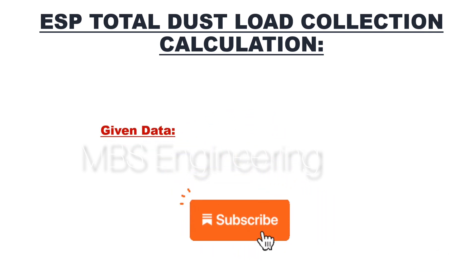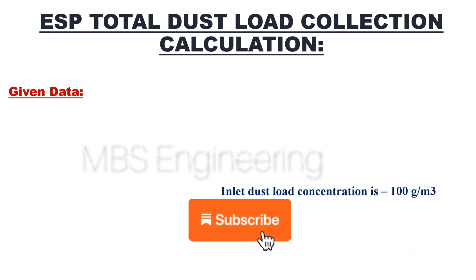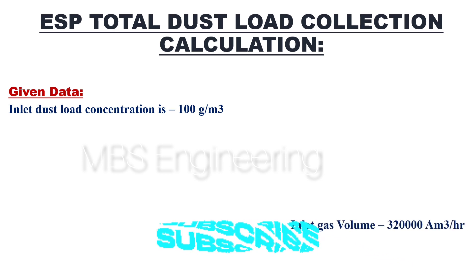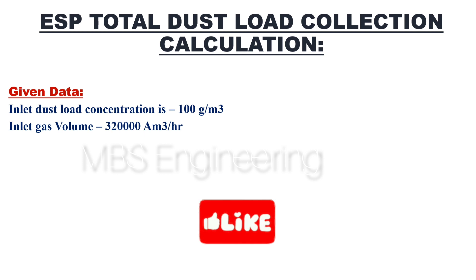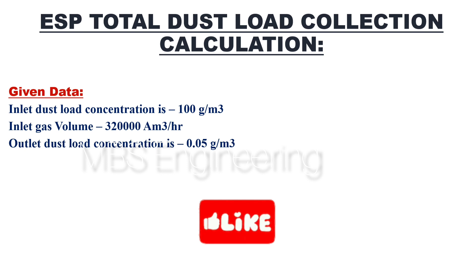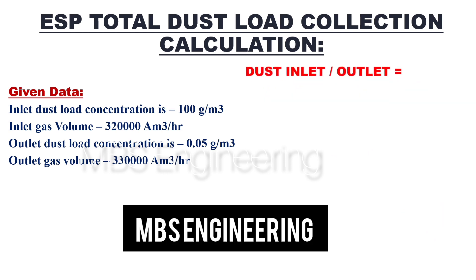Now, understand how to calculate the ESP total dust load collection in the given inlet and outlet dust concentration and gas volume. Given data: inlet dust load concentration is 100 grams per cubic meter, inlet gas volume is 3,20,000 cubic meters per hour, outlet dust load concentration is 0.05 grams per cubic meter, outlet gas volume is 3,30,000 cubic meters per hour. Then, how do we calculate the dust concentration at the inlet and outlet of the precipitator?